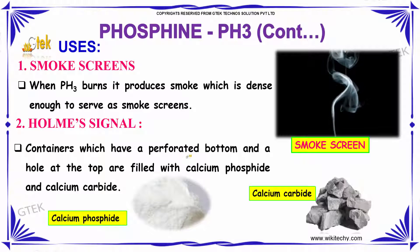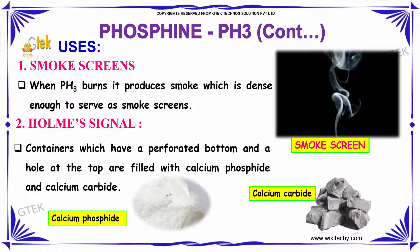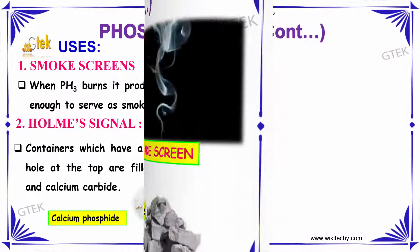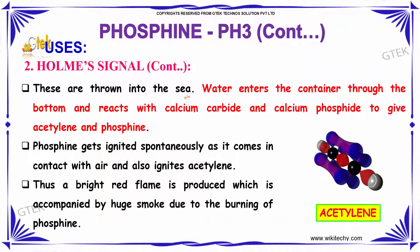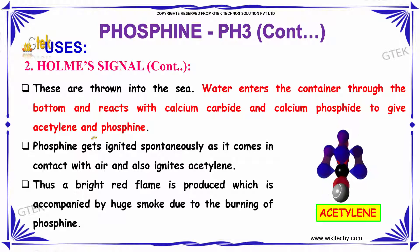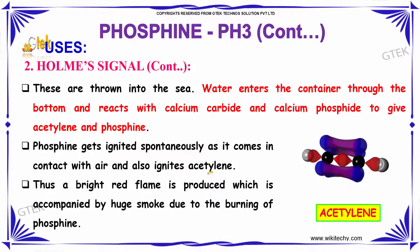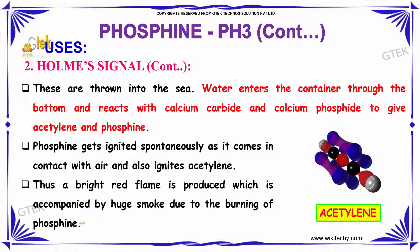Home signal: Containers which have a perforated bottom and a hole at the top are filled with calcium phosphide and calcium carbide. This acts as the home signal and is used in ships. If a person is stranded somewhere in the ocean, they use this home signal to show their location. These containers are thrown into the sea. Water enters through the bottom and reacts with calcium carbide and calcium phosphide to give acetylene and Phosphine. Phosphine ignites spontaneously on contact with air and also ignites the acetylene, producing a bright red flame accompanied by huge smoke.